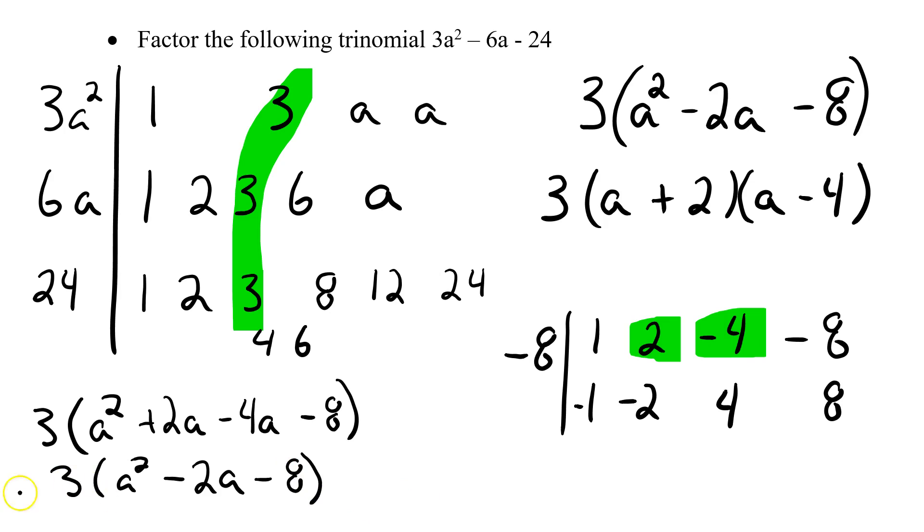Combine that, so I get a² - 2a - 8. And then of course when I times that by 3, I'm going to get 3a² - 6a - 24, which again is my original question. So it looks like I did this one correctly.